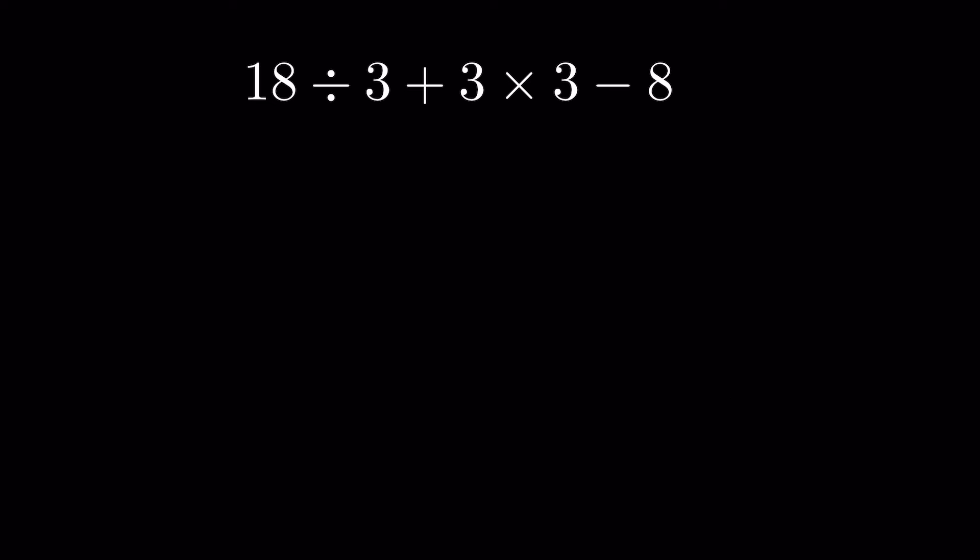Now let's solve this question. First we have division. 18 divided by 3 is 6, then plus 3 times 3 minus 8. Next step, before addition, we have to do multiplication. So 6 plus 3 times 3 is 9 minus 8.